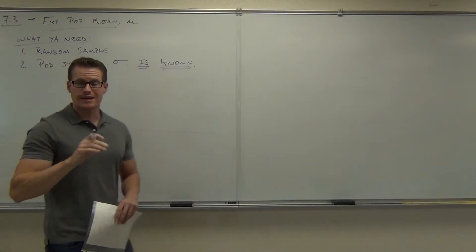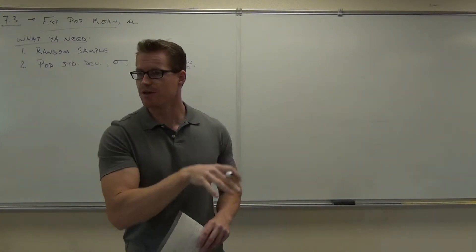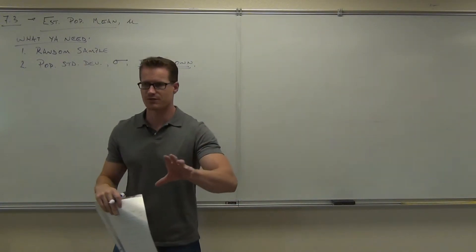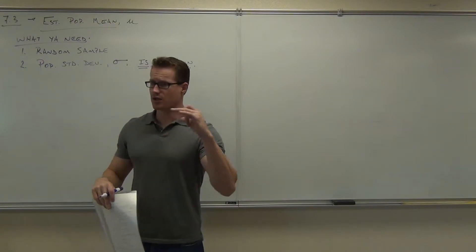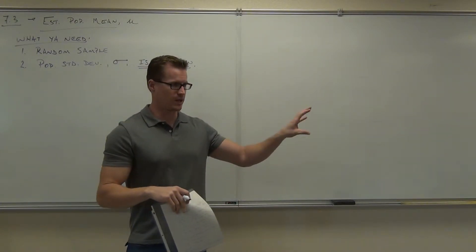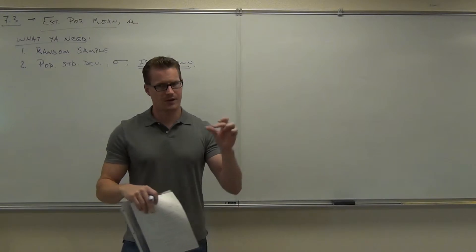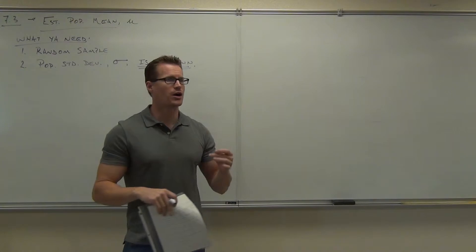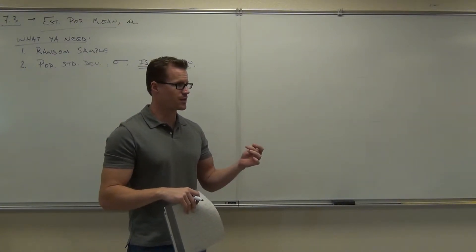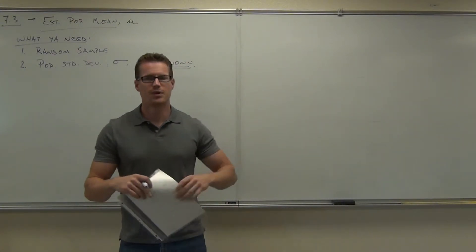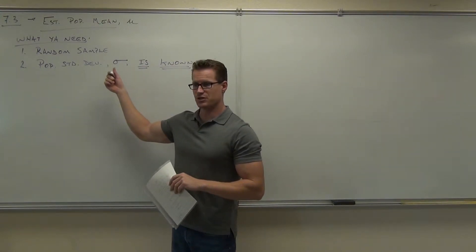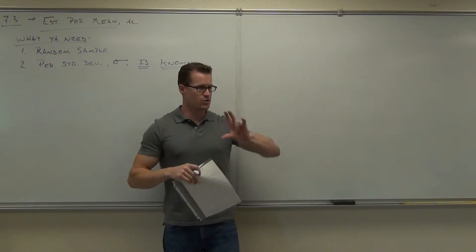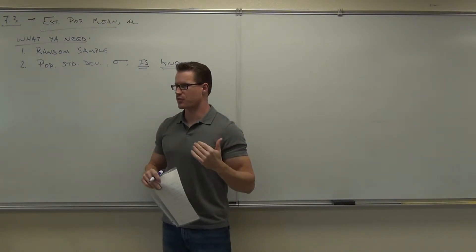...known. So somewhere in your problem it's going to tell you the population standard deviation, or it's going to say 'assume the population standard deviation is blank.' That's a very important piece of information, because in the next section you're not going to know this and we'll do something different. This keys you in on whether you do a z-score, which we're doing right now, or a t-score, which is the next section.